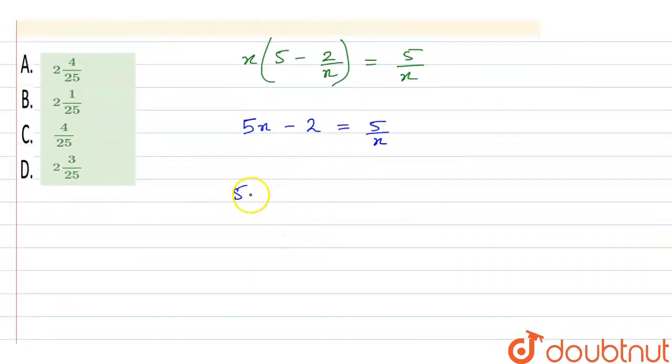And then it will be 5x minus 5 upon x is equal to 5, right? On dividing this equation by 5.